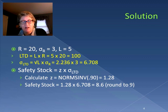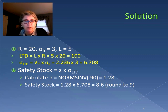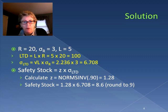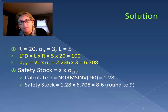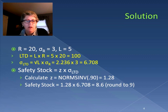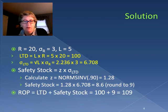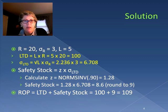Now we can go back to the standard safety stock formula: z times the standard deviation of lead time demand. We calculate the z-statistic using the 90% service level — using Excel's NORM.INV formula — and get 1.28. Multiplying 1.28 by 6.708 gives 8.6, and since we always round up for safety stock, our safety stock is 9 ink cartridges. Our reorder point is lead time demand plus safety stock: 100 + 9 = 109. When inventory drops to 109 ink cartridges, we place our order.